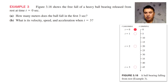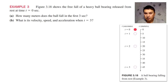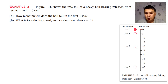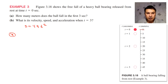Now let's do one example. The figure on the right illustrates the free fall of a heavy ball bearing released from rest at time t equal to zero, meaning the velocity was also zero at that point. The first question is to find where the ball is at t equal to 3. The position function is s equal to 4.9t squared. So s of 3 is 4.9 times 9, which equals 44.1 meters.